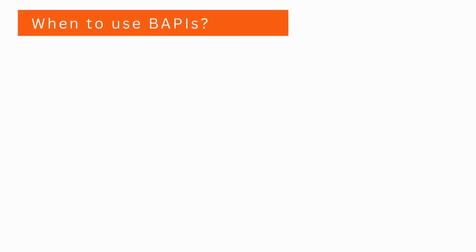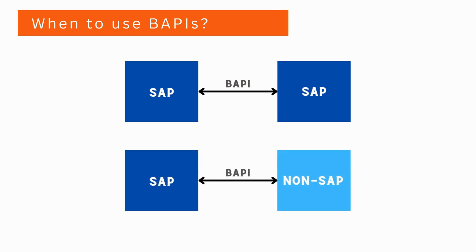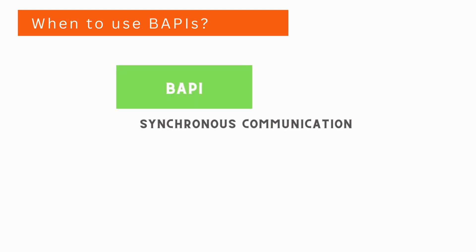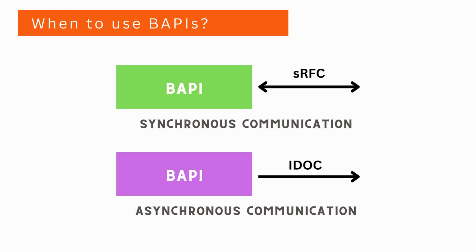BAPIs can be used to integrate two SAP components or to integrate an SAP component with a non-SAP component. BAPIs support both synchronous and asynchronous modes of communication. To use BAPIs for synchronous communication, you have to use synchronous RFC. If you want to use BAPIs for asynchronous communication, then you have to use IDOCs. To know more about IDOCs and RFC, please watch my other videos.